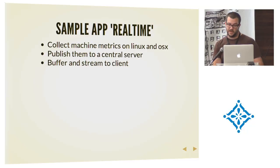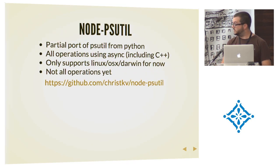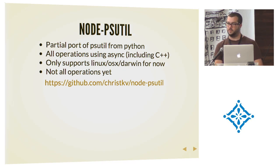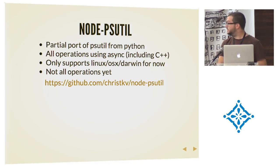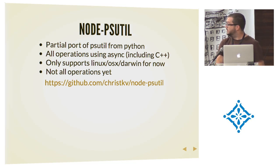What I did was start putting together a very simple real-time application. It basically collects a bunch of metrics from Linux or OSX, publishes them to a central server, then buffers and streams them to the client. I started porting PSUtil from Python to Node — it's on GitHub. You can use it to pull processes, CPU times, memory usage, disk usage, etc. If you can help, just send a pull request. All operations are asynchronous using LibUV, it only supports Linux and OSX Darwin right now, and not everything is implemented.